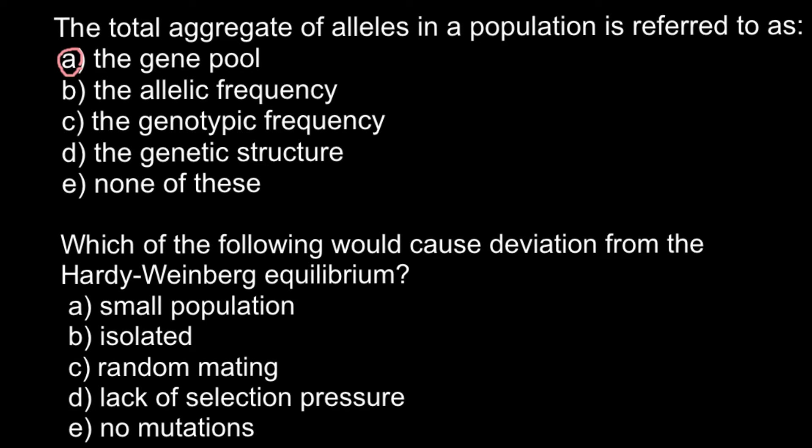Lack of selection pressure is one of the requirements, and C, random mating, is also one of the requirements. Because if there's going to be assortative mating, that means that with each following generation some of the alleles would become less and less frequent because some of the phenotypes would be preferential, and phenotype also means genotype.